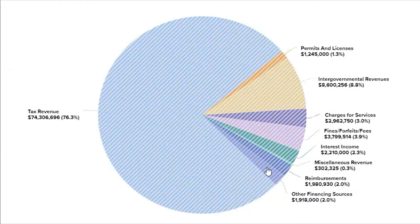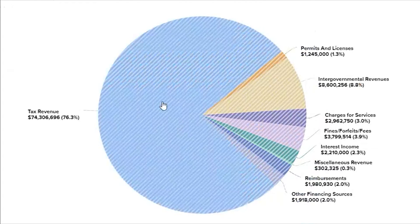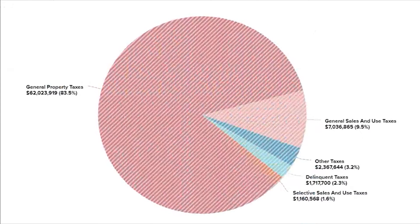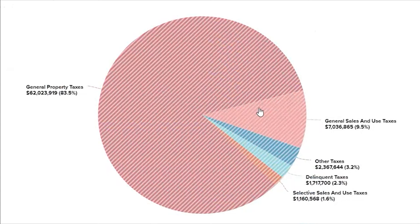Let's explore taxes further since it is the largest slice of the pie. For the county in 2022, 83.5% of taxes was general property taxes, 9.5% were general sales and use taxes, 3.2% were other taxes, 2.3% were delinquent taxes, and 1.6% were selective sales and use taxes. Now let's explore county expenses to see where this money goes.